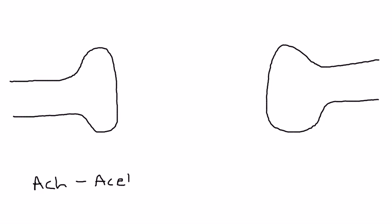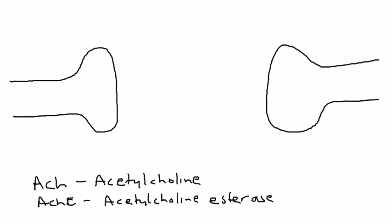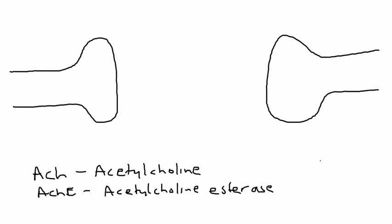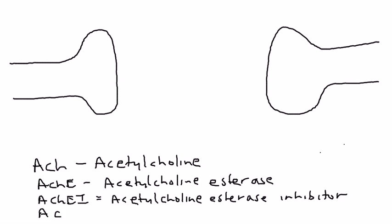ACH will be acetylcholine. ACHE will be acetylcholine esterase, and I'll explain what each of these are in a few minutes. ACHEI will be acetylcholine esterase inhibitor. And finally, ACHR is the acetylcholine receptor. Now let's go back to the diagram.